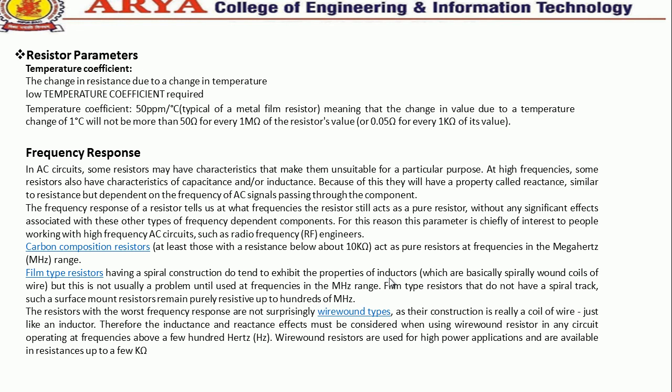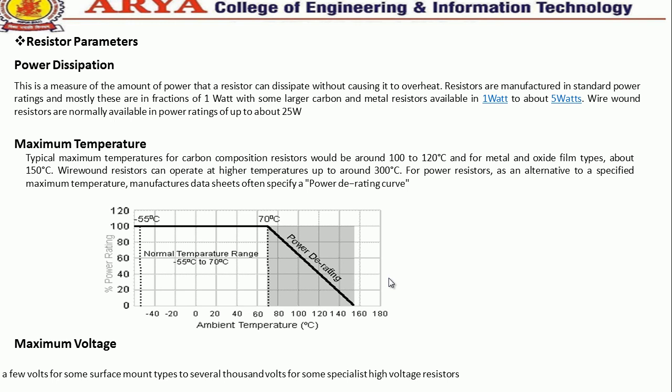Another parameter of resistors is power dissipation, which is a measure of the amount of power a resistor can dissipate without overheating. Resistors are manufactured in standard power ratings, mostly in fractions of one watt, with some larger carbon and metal resistors available from one watt to about five watts.